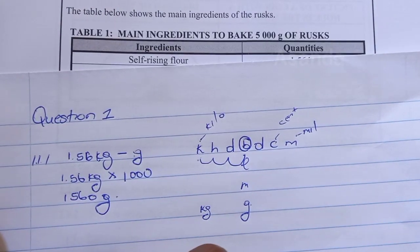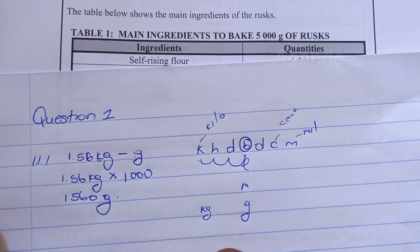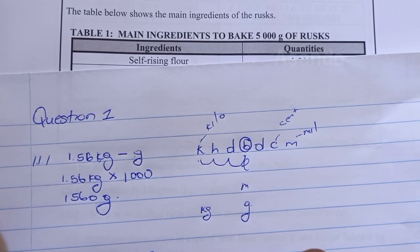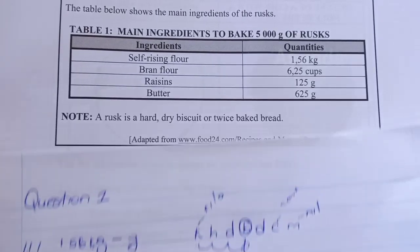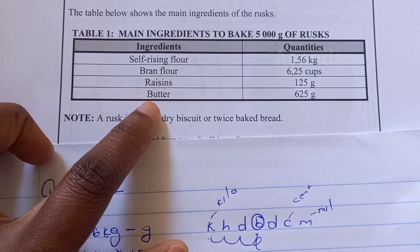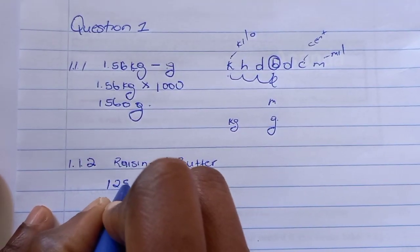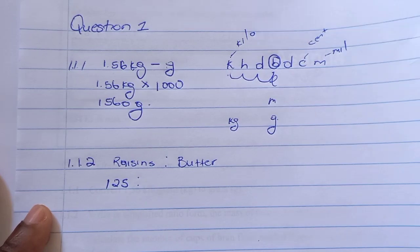Okay, so the mass of raisins. I'm going to write raisins because that's how they started. We say 125 is to 625.